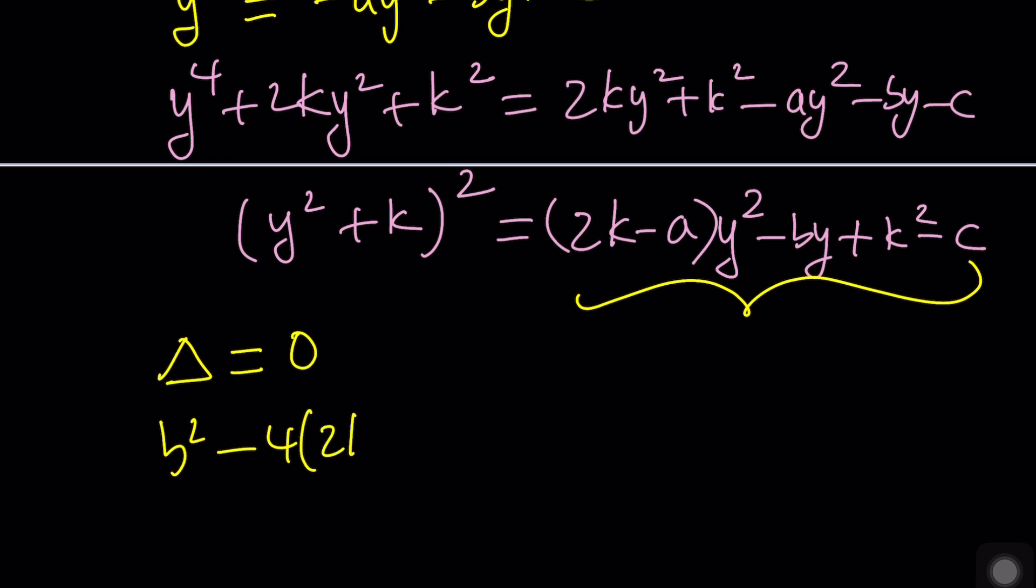Of course, in this case, you know the values of a, b, c. So, the only unknown is k. You're going to get a cubic in k. k cubed is going to come up, right? And then, you can solve that cubic.